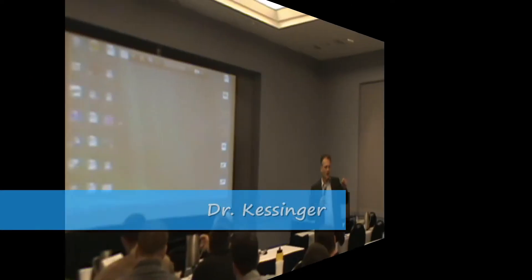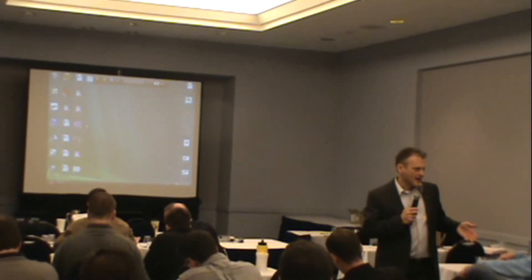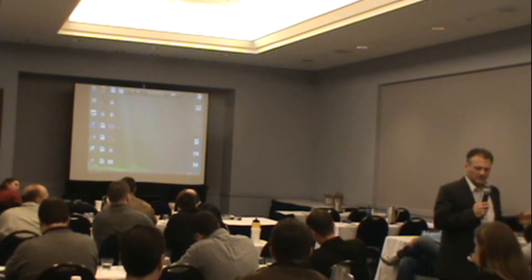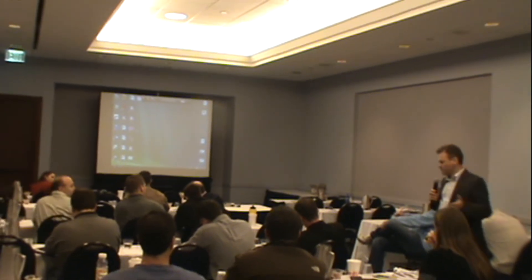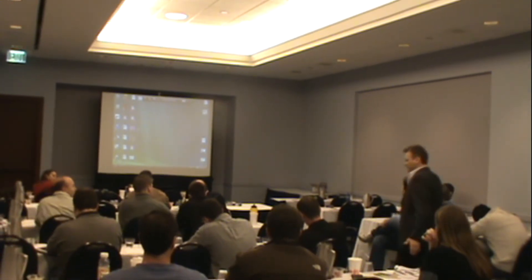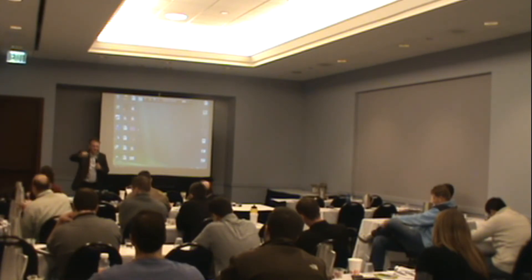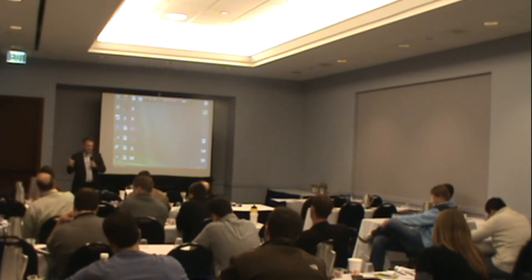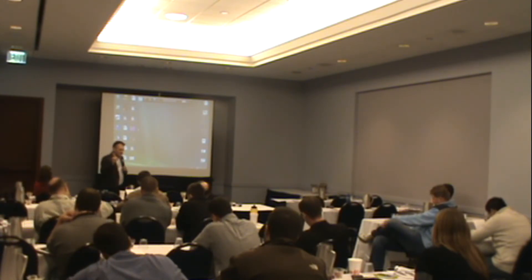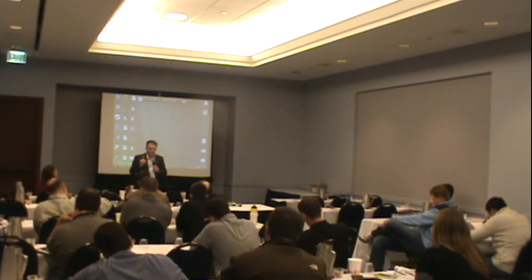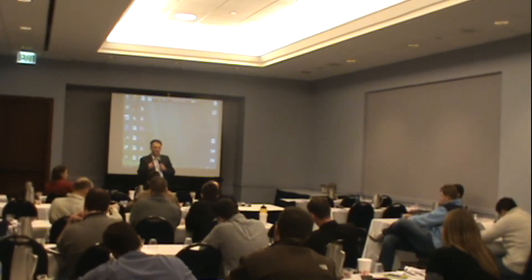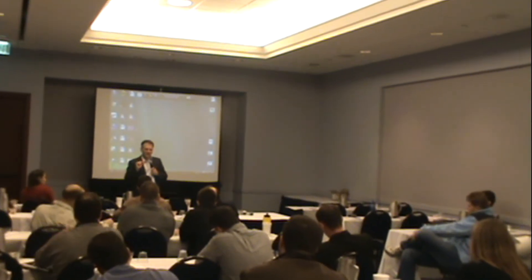The nerve system interacts with and controls the endocrine system. Through what specific area of the brain? Through the hypothalamus. The hypothalamus is the bridge between the nerve system and the endocrine system, which means the endocrine system is under the direct control of the nerve system.